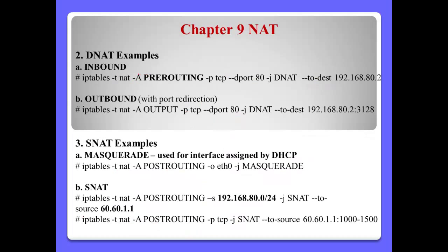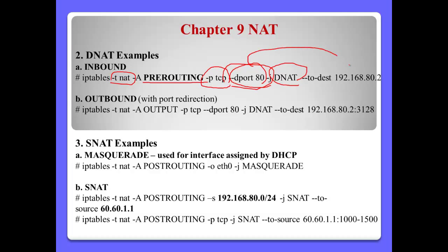Example of inbound Destination NAT: iptables -t nat PREROUTING, protocol TCP, destination port 80 (web server), then use --to-destination 192.16.1.82. This means if a packet arrives at our web server's public IP address, the packet will be translated to the internal web server IP address 192.16.1.82.